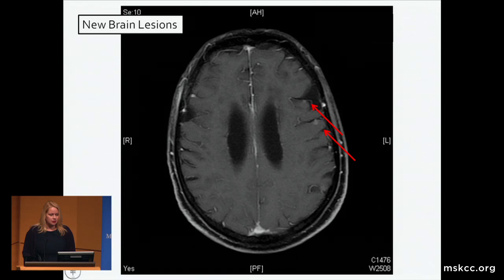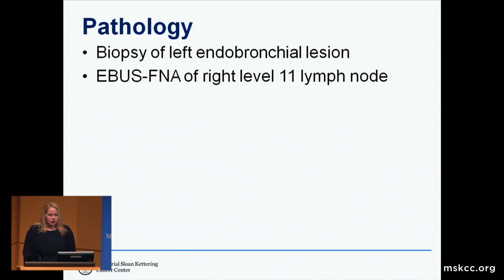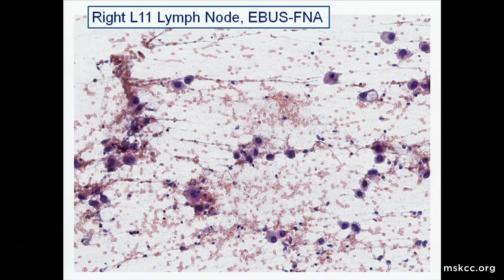I received the pathology for both thoracic surgical pathology and cytopathology. The EUS-FNA of the right level 11 lymph node showed a malignant population of cells. They are dispersed singly and have abundant eosinophilic cytoplasm. One cell shows a vacuole, which I was able to see in a variety of cells in this smear.